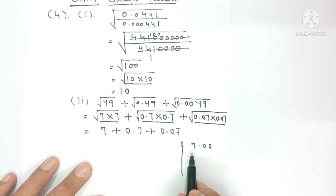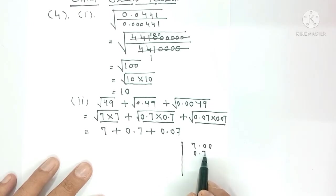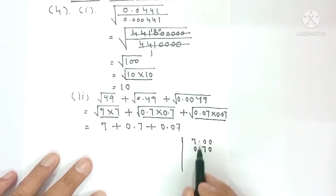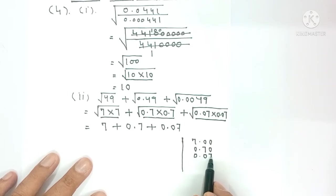How to add them? First write 7 as 7.00. Why write 00? Because I need 2 digits after the decimal. Write 0.7 as 0.70, and 0.07 as 0.07.